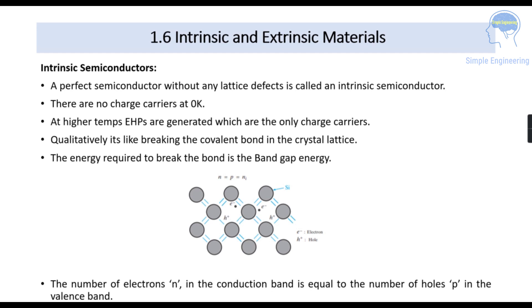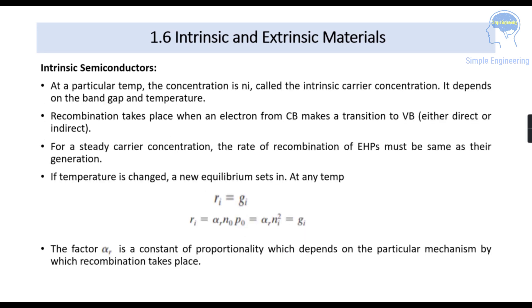N is equal to P is equal to Ni, which is your intrinsic carrier concentration. N is the electrons and P is the holes. So the number of electrons N in the conduction band is equal to the number of holes in the valence band. At a particular temperature, the carrier concentration is Ni, which depends on the band gap and temperature. Recombination takes place when an electron from the conduction band makes a transition to the valence band — it can be either a direct or an indirect transition. For a steady carrier concentration, the rate of recombination of electron-hole pairs must equal their generation rate.